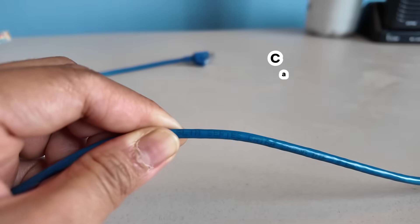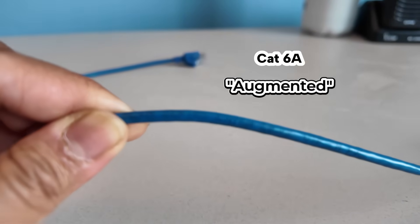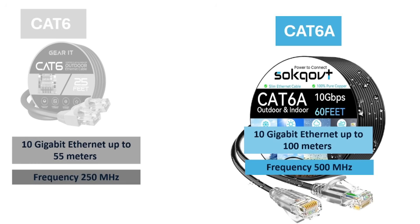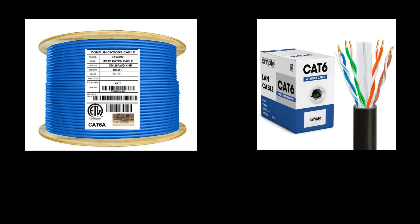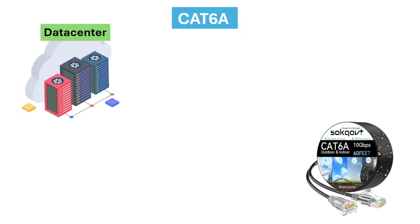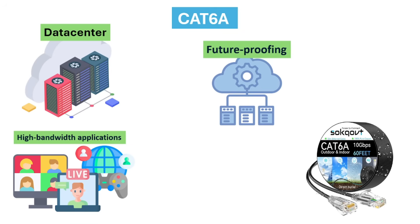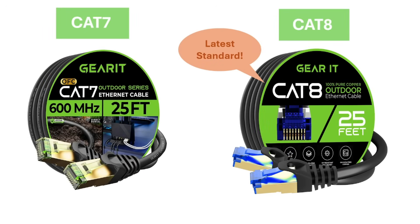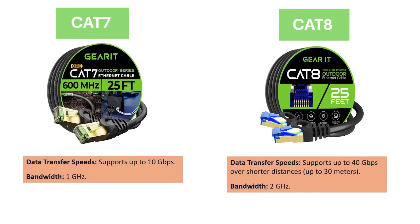After Cat6 we have Cat6a, where 'a' stands for augmented — it's an improved version of Cat6. Cat6a offers higher bandwidth of 500 MHz versus 250 MHz for Cat6, and improves performance for longer distances of up to 100 meters compared to 55 meters for Cat6. Cat6a is suited for larger networks, data centers, and applications requiring high speeds. There's also Cat7 and Cat8, with Cat8 being the latest and suited for high-performing server rooms and data centers, though they are much more expensive.